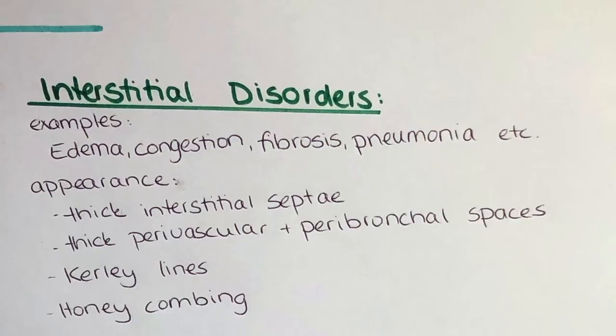Interstitial disorders are for example edema, congestion, fibrosis, and pneumonia. These will appear by thickened interstitial septae, thick perivascular and peribronchiolar spaces, curly B-lines in the periphery of the lung, and honeycombing — where there are thicker cavities with fluid structures around them in the interstitium.